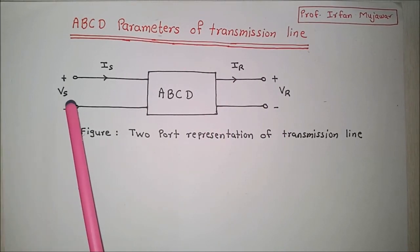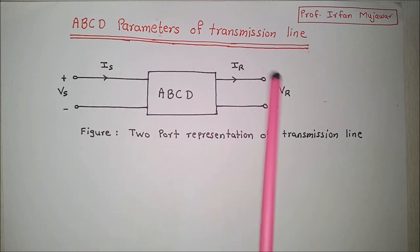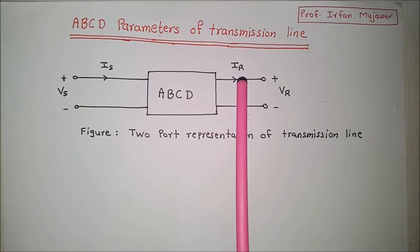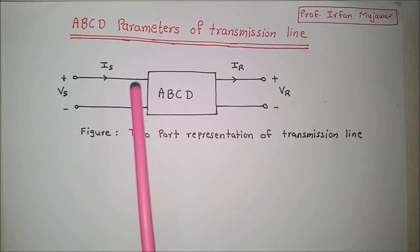Here note that Vs is the per-phase sending end voltage, Vr is the per-phase receiving end voltage, Is is the per-phase sending end current, Ir is the per-phase receiving end current. ABCD are the parameters of transmission line which depends on the type of transmission line and the method by which ABCD parameters are calculated.